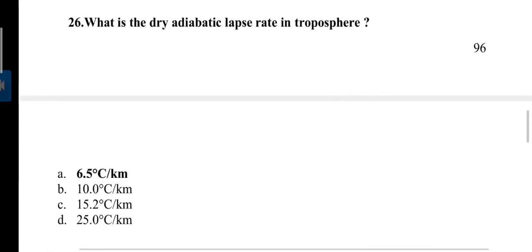What is the dry adiabatic lapse rate in troposphere? That is 6.5 degrees Celsius per kilometer. Lapse rate can be defined as a vertical temperature decrease gradient.